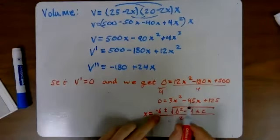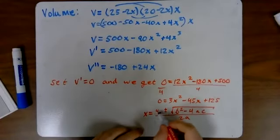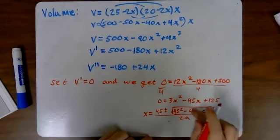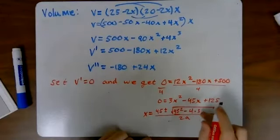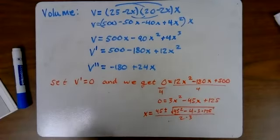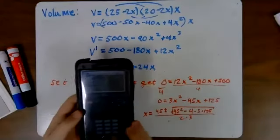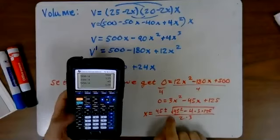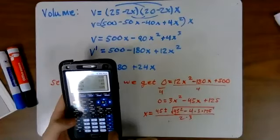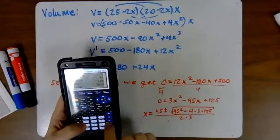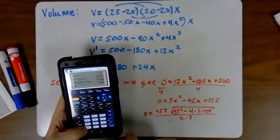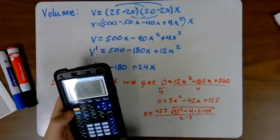Okay, our b is negative 45, so we have here a positive 45 plus or minus the square root of 45 squared minus 4 times 3 times 125 all over 2 times 3. All right, now we can break out the old calculator. Okay, so what is the square root? Let's see, 45 squared is 2025. 4 times 3 times 125 is 1500. 2025 minus 1500 is 525. So the square root of that is 22.9.